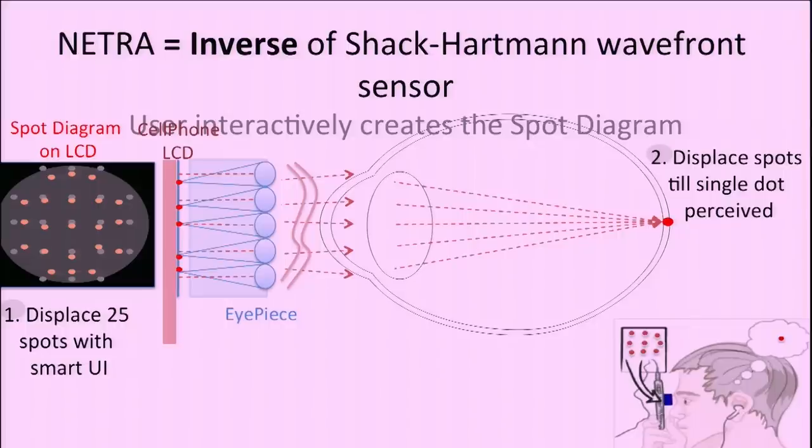So the Netra is the Fosbury flop equivalent. We can do the exactly opposite of what these instruments are doing. Instead of shining laser into the eye, we're using cell phones, and instead of using complex sensors, we're using the user interaction.